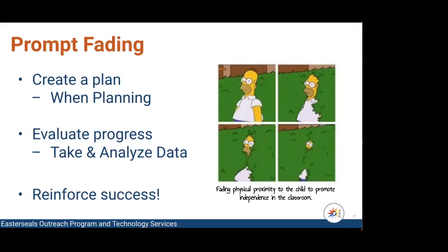If they stalled, stop, drop, and assess. Maybe you find that there are three adults in the classroom and they're doing three different types of prompting, fading three different levels, or three different strategies. That's going to be very confusing to a student. So make sure that you look at all of those different scenarios if you have a student that stalls.